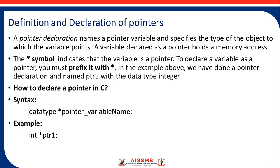Definition and declaration of pointers. A pointer declaration names a pointer variable and specifies the type of the object to which the variable points. A variable declared as a pointer holds a memory address. The * symbol indicates that the variable is a pointer. To declare a variable as a pointer, you must prefix it with *. In the example above, we have done a pointer declaration and named ptr1 with the data type integer.